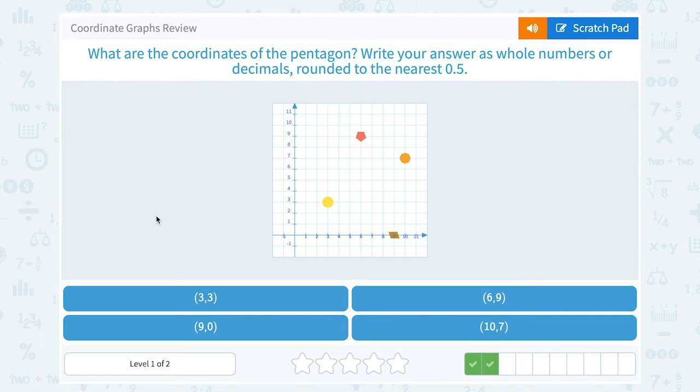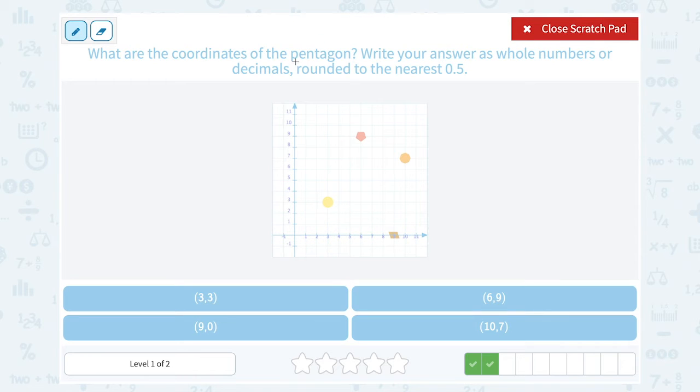What are the coordinates of the pentagon? Write your answer as a whole number or decimal rounded to the nearest 0.5. Alright, well keep in mind, a pentagon means a figure with 5 sides.